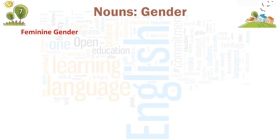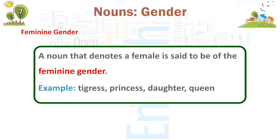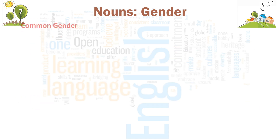Feminine gender. A noun that denotes a female is said to be of the feminine gender. Examples: tigress, princess, daughter, queen.